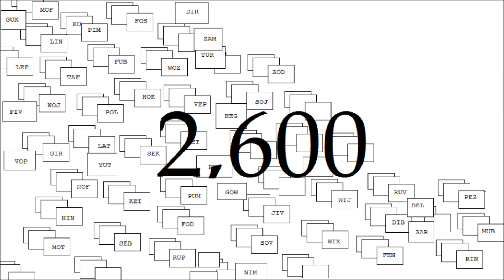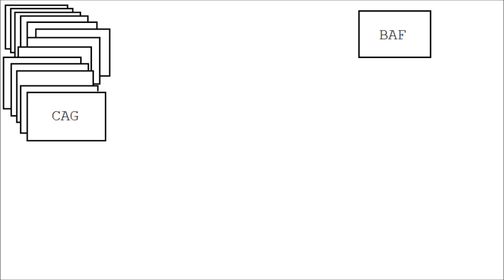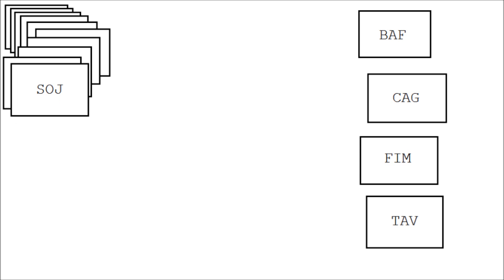Ebbinghaus designed a set of 2,600 cards for his experiments. On each card, he printed a unique nonsense syllable. To create a series of syllables for a memory task, Ebbinghaus would draw cards at random from the deck. He didn't place these cards back into the deck until all of the syllables had been used once.